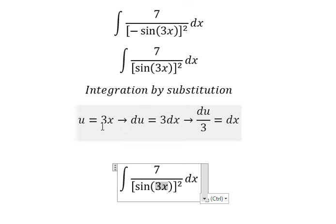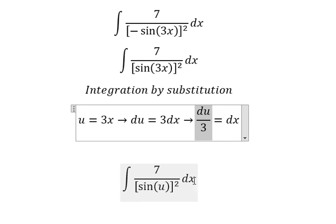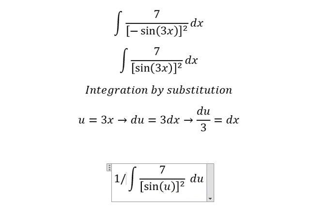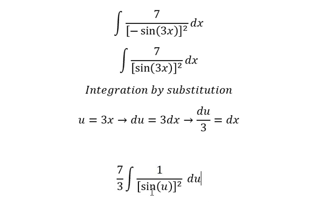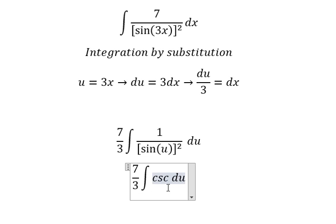So this one we change by u, dx we change by this one. Number seven I will put in here. This one I can write into cosecant of u square.